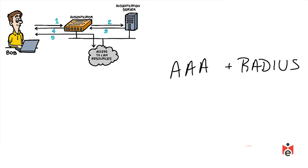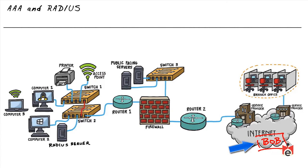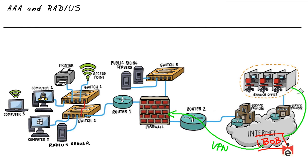Next, we look at the purpose and function of AAA and the RADIUS protocol. Consider Bob at home connecting via VPN to the corporate network. When Bob connects to the firewall, the firewall challenges him for credentials — who he is, his password, or multi-factor authentication details. The firewall requires these before allowing VPN access to internal resources. Storing Bob's credentials locally on every device — firewall, branch office device, and 15 other things — doesn't scale well.